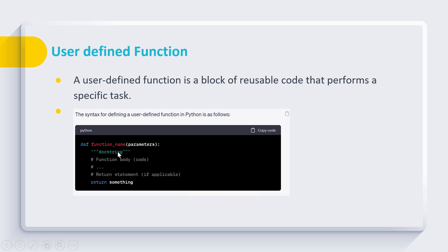We will be discussing more on the docstring in our coming session. Then we specify the function body, which includes the full code of our function. The function can also return a value — this is optional — and through the return statement, a function can return a value to the calling environment.